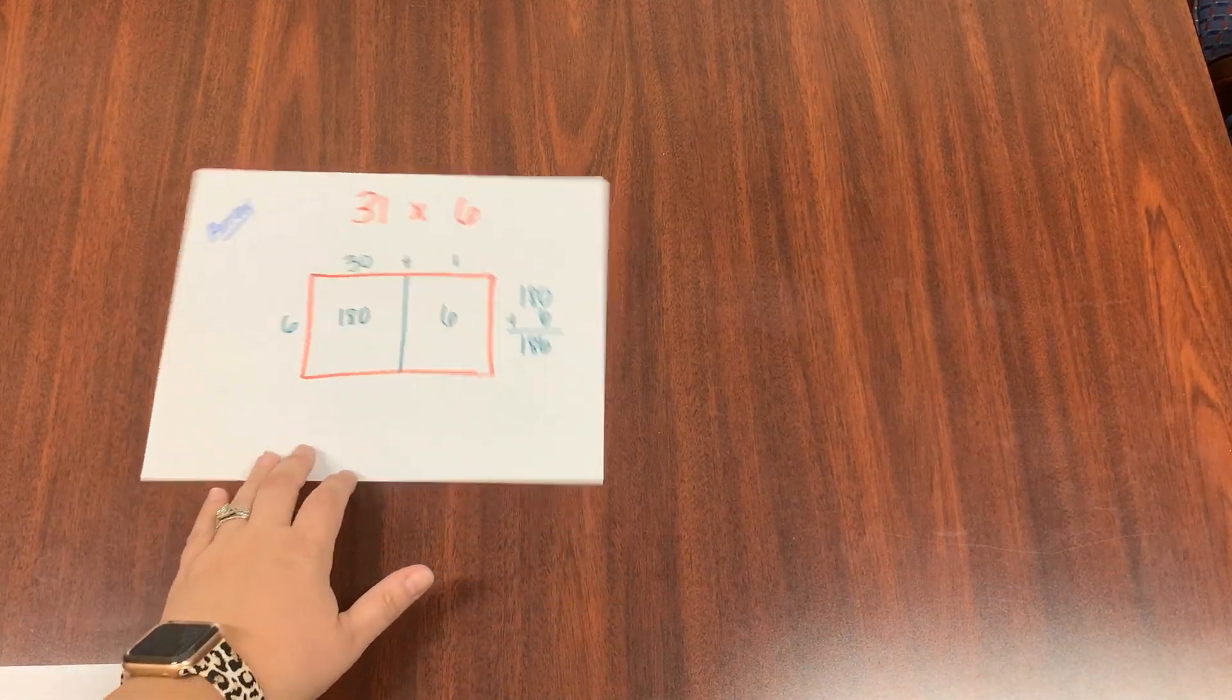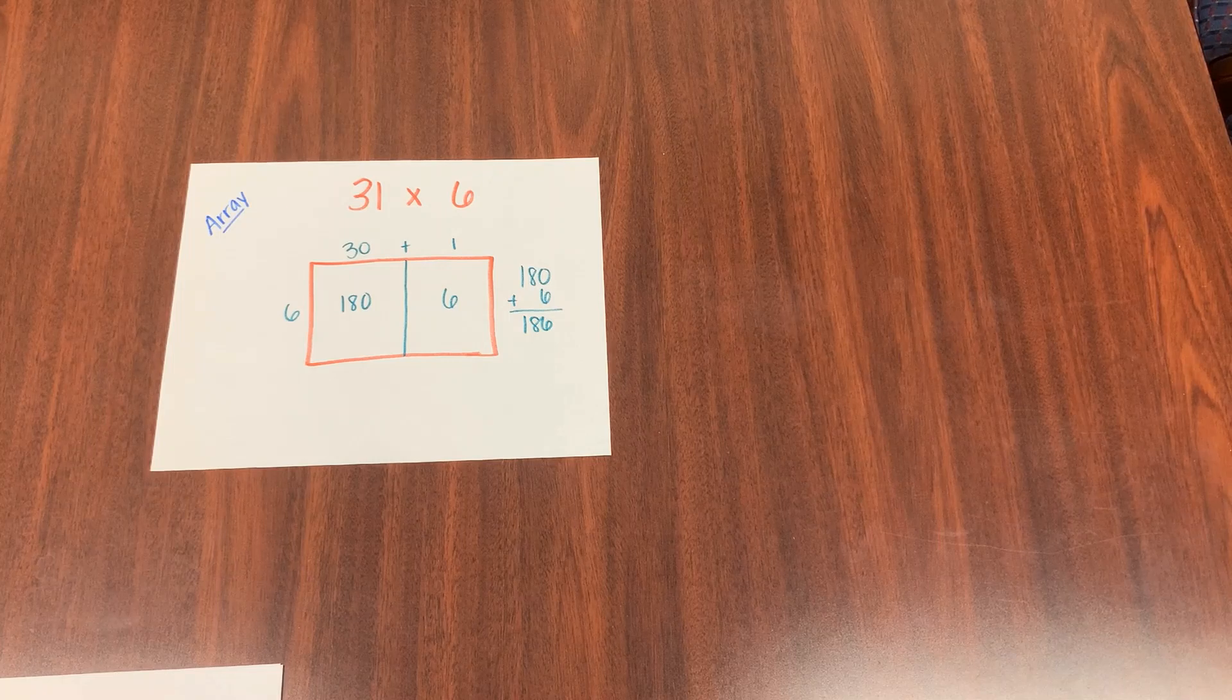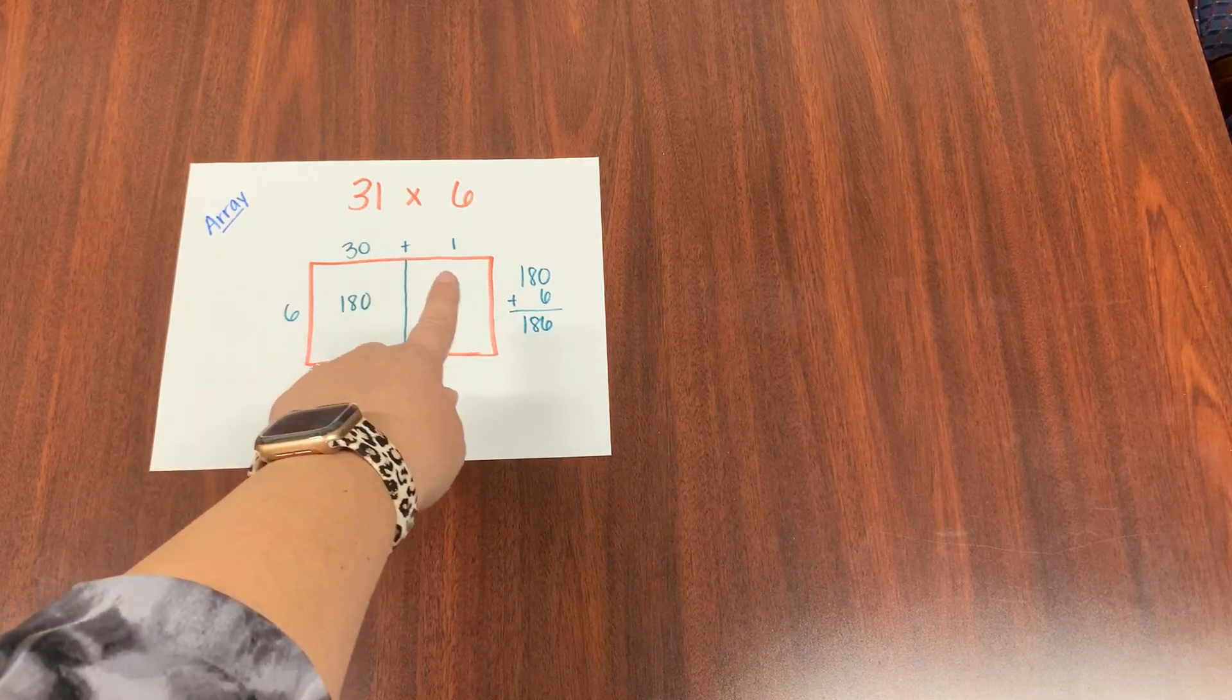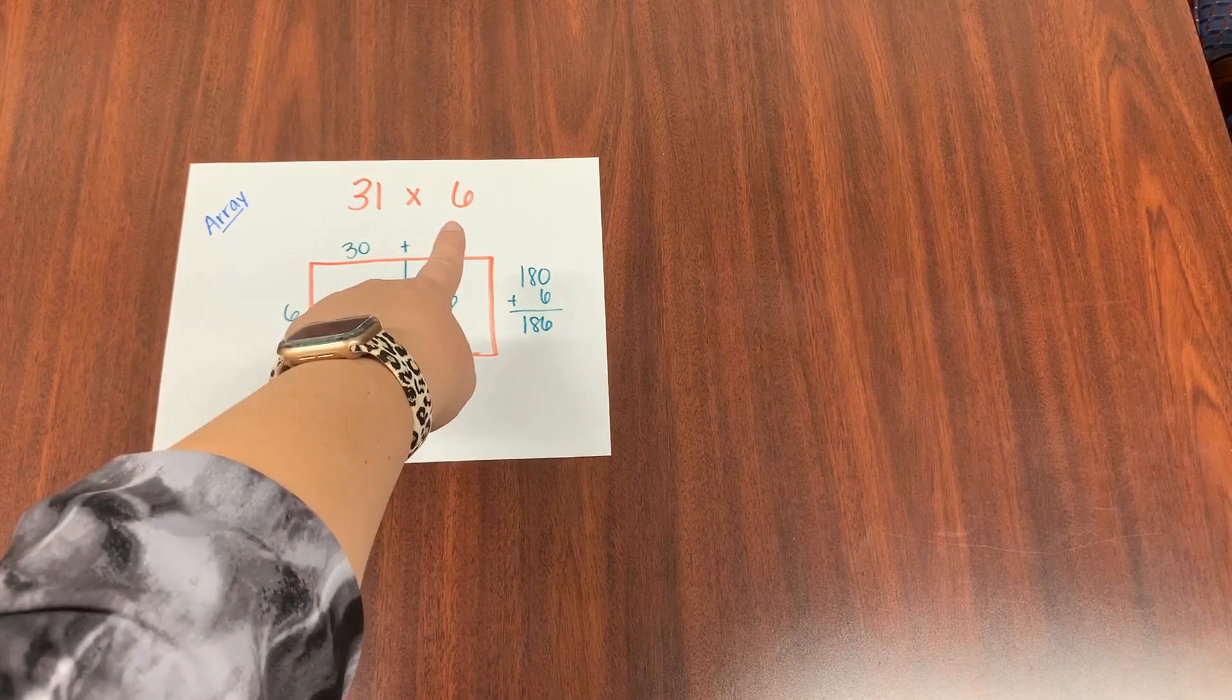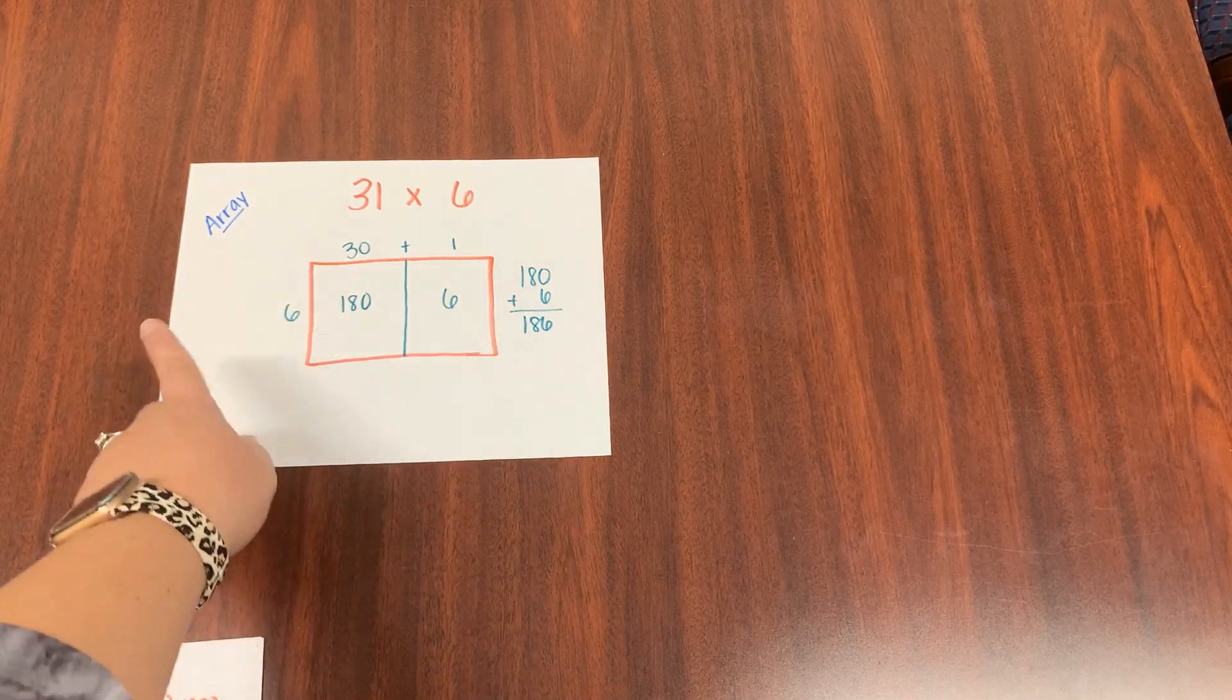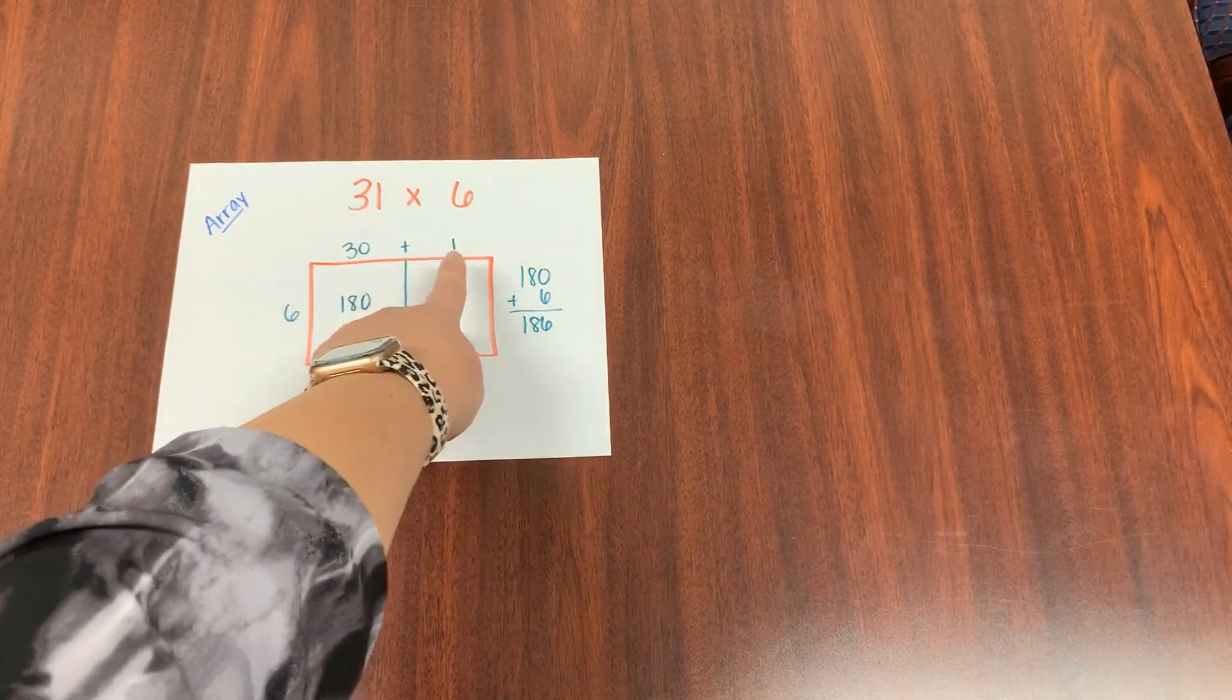Let's look at a problem. This looks like what you are used to solving. You have an array here and we're using our expanded form. We took 31 and we use the expanded form of 30 plus 1 because it was a 3 in the tens and 1 in the ones. And then 6 is just 6 ones. We multiply our columns by our rows. 6 times 30 equals 180. 6 times 1 is 6.